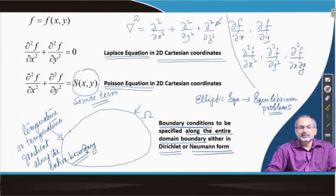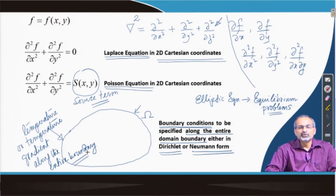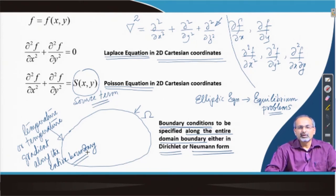In principle, if you impose certain temperatures or temperature gradients along the boundary and the inner part of the domain is not in equilibrium with those conditions, it will take a certain finite extent of time for the interior to come to equilibrium with the boundary condition. This involves transient behavior — a time-dependent behavior by means of which the temperature will change at each and every point within the domain and then finally come to equilibrium.